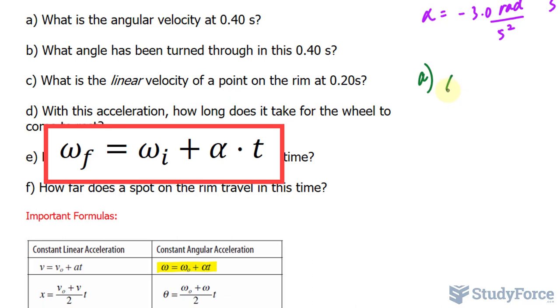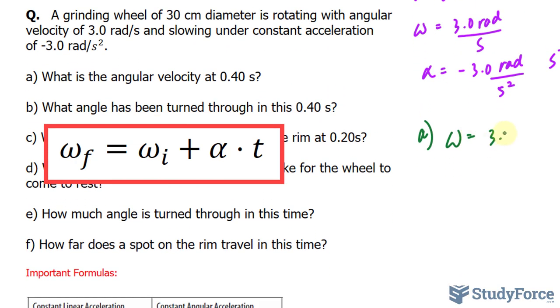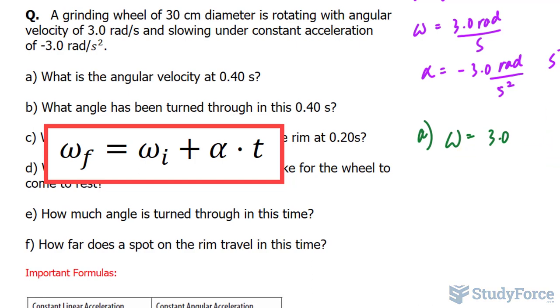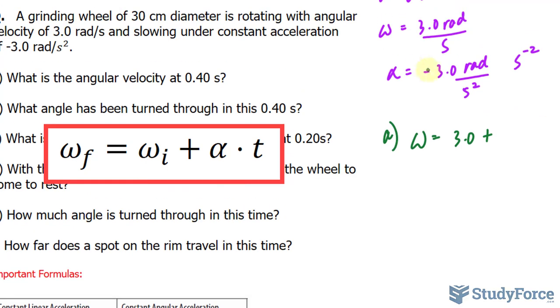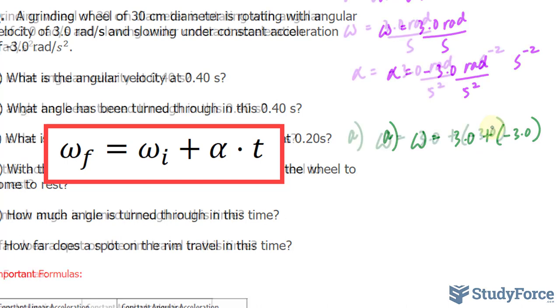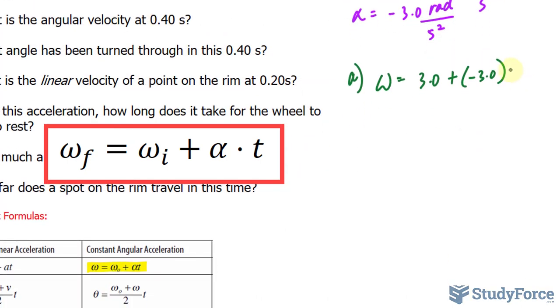So I'll write down A. And that velocity that we're looking for is represented here. By taking the initial velocity given in the question as 3.0 radians per second, I'll omit the units just for simplicity's sake. Plus, the angular acceleration is negative 3.0. Notice that I wrote down plus minus, but feel free to simply write down minus instead of these two symbols next to each other. Multiply to the time given in the question at 0.40 seconds.